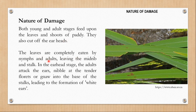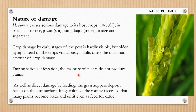The leaves are completely eaten by nymphs and adults. You can see here how large chunks of leaves are missing, leaving only the midrib. In the ear head stage, the adults attack the ears, nibble at the tender florets or gnaw into the base of the stalks, leading to the formation of white ears. Basically, they feed on the ear head of rice and when they do, only the husk of the rice is left — that character is known as the white ear head.